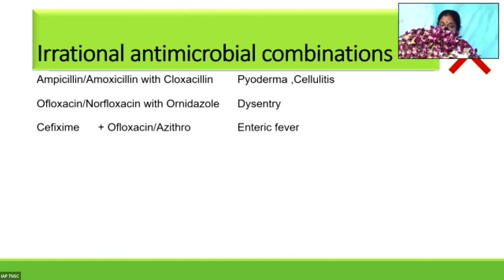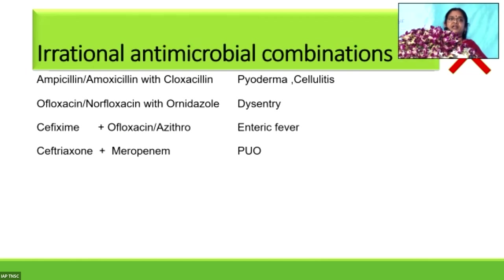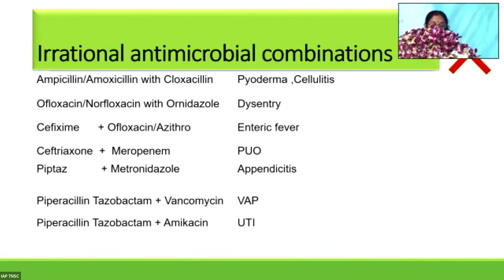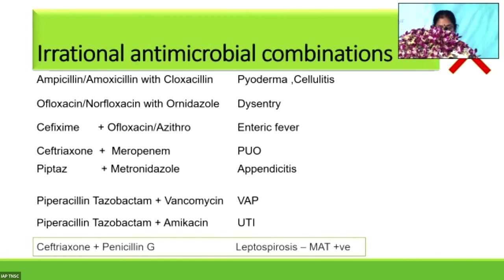In enteric fever, using cefixime plus ofloxacin or cefixime plus azithromycin is irrational. In PUO, when you have started ceftriaxone and the child's fever is not coming down, adding meropenem is not right. In appendicitis, when the child is already on pip-taz, adding metronidazole is not going to help. In VAP — ventilator-associated pneumonia — piperacillin-tazobactam plus vancomycin, or pip-taz plus amikacin in UTI, should be avoided because of potential nephrotoxicity.